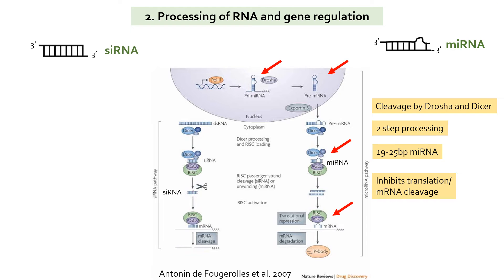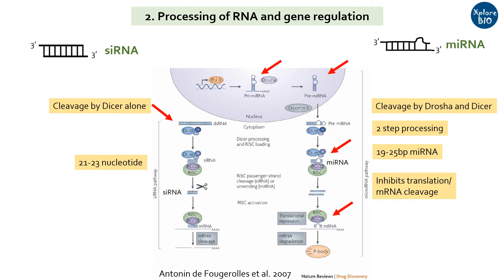On the other hand, in the case of siRNA, it is generally introduced to the cell externally as long double-stranded RNA. This is directly cleaved by Dicer to short mature siRNA of 21 to 23 nucleotides long. Thus, siRNA processing is a single-step process. Unlike miRNA, Drosha is not involved in siRNA processing. After binding with RISC, the passenger strand of siRNA is degraded, and the guide strand is involved in mRNA targeting for cleavage.